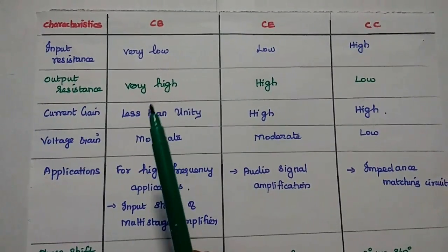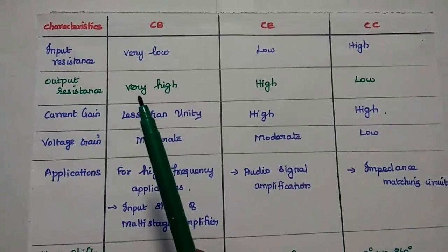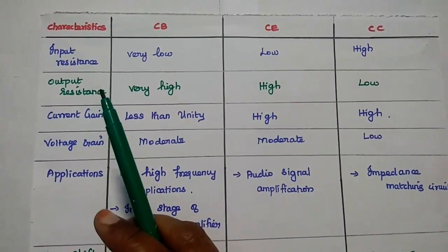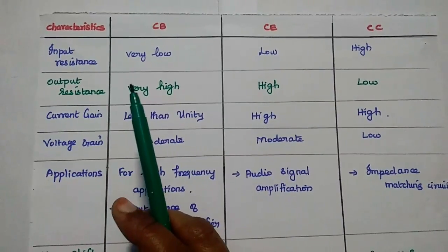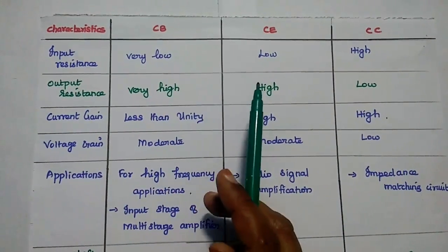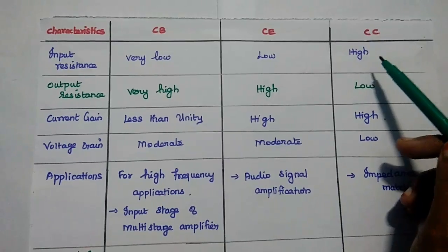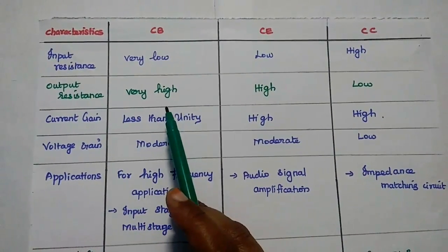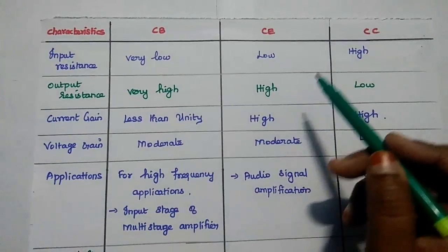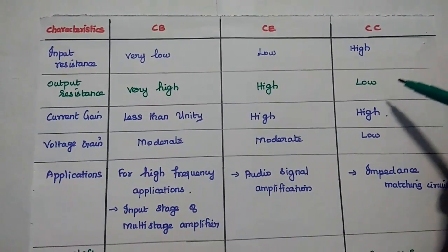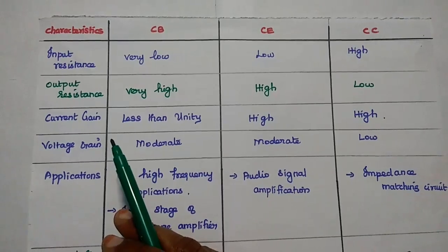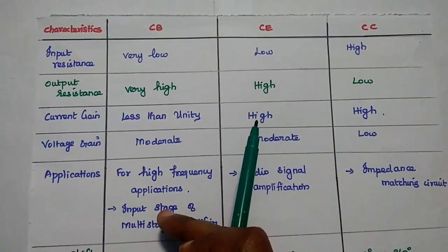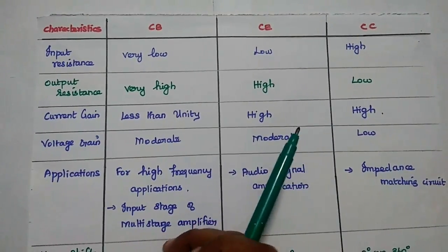Now let's compare the important characteristics of common base, common emitter, and common collector configurations. The input resistance for common base is very low, for common emitter it is low, and for common collector its value is high. The output resistance is very high for common base, high for common emitter, and low for common collector. The current gain is less than unity for common base, and high for both common emitter and common collector.